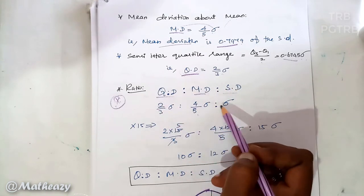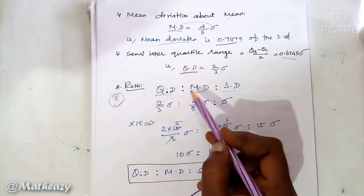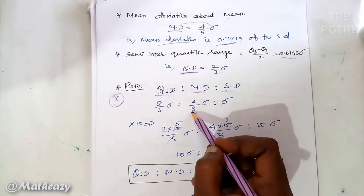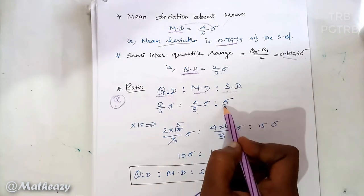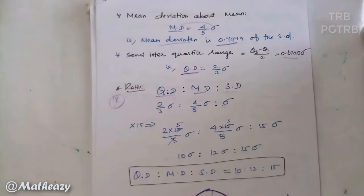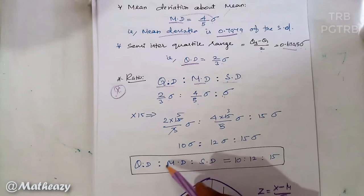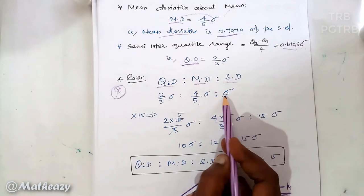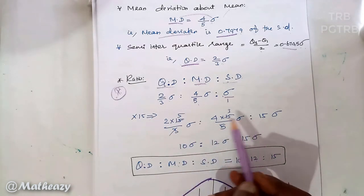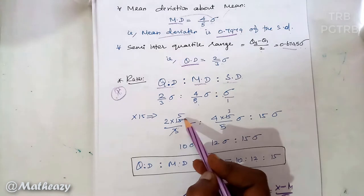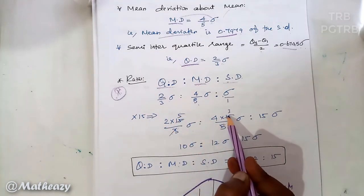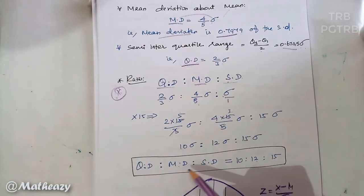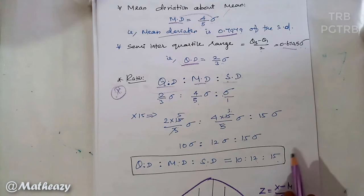The ratio of quartile deviation, mean deviation, and standard deviation in a normal distribution is 10 : 12 : 15. This is derived by taking LCM: quartile deviation = 2/3 × sigma, mean deviation = 4/5 × sigma, and standard deviation = sigma. So LCM of 3 and 5 is 15. Multiplying: QD = 10, MD = 12, SD = 15. Therefore the ratio QD : MD : SD = 10 : 12 : 15.